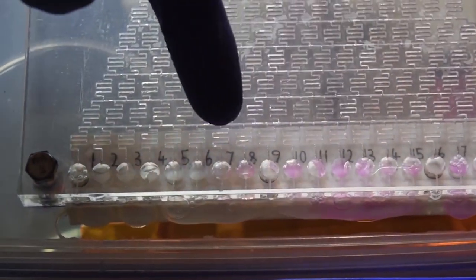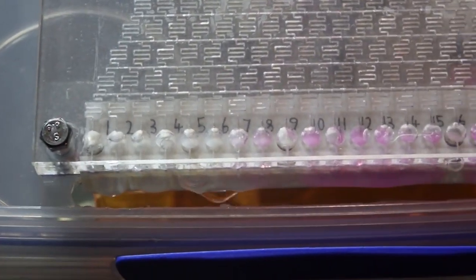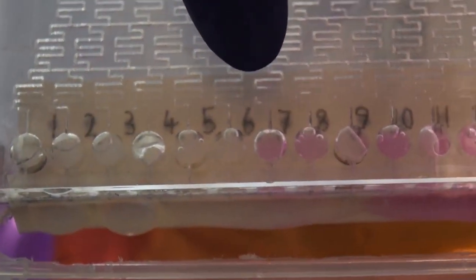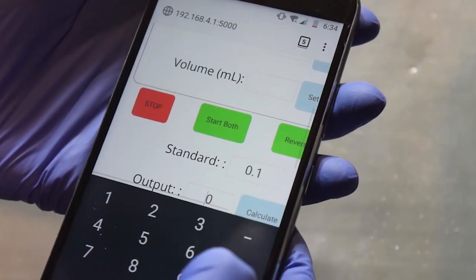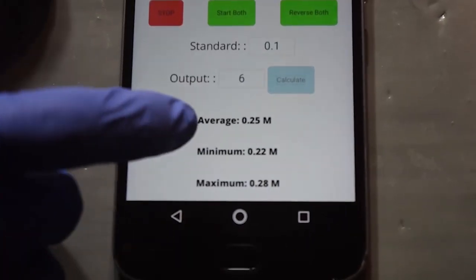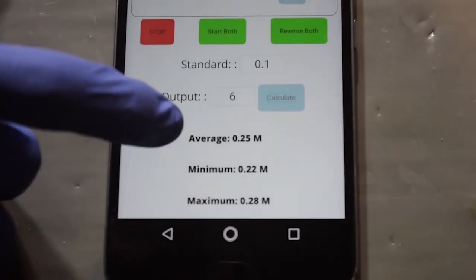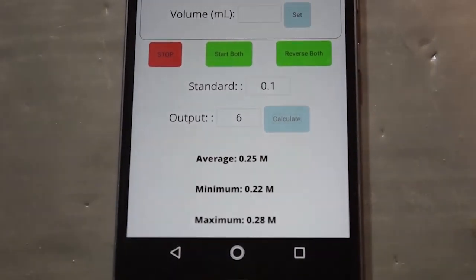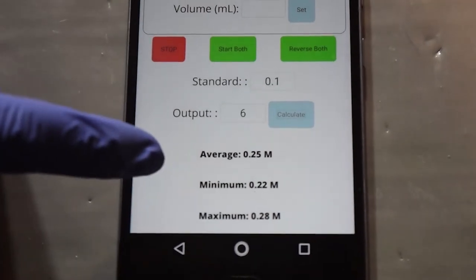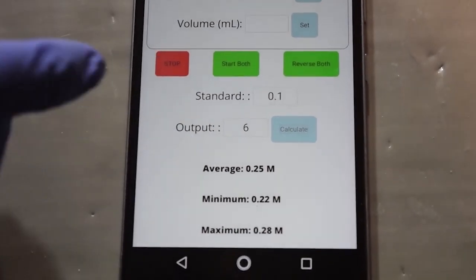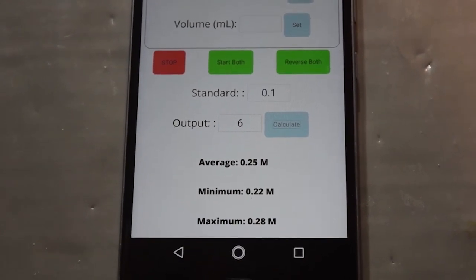Already you can see that the pink outputs are coming a lot further across this end. So you can see here that the color change now occurs on the sixth junction. So if we come over to the app, we can now type in six, which we can then calculate. And what we get as you can see is an average of a 0.25 molar solution of our sodium hydroxide. The minimum value we've calculated to be 0.22 molar and the maximum being 0.28. This aligns perfectly with what we actually measured the concentration of the sodium hydroxide to be, which is around 0.23 molar. So you can tell that it is quite accurate.